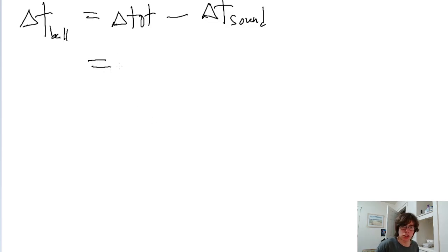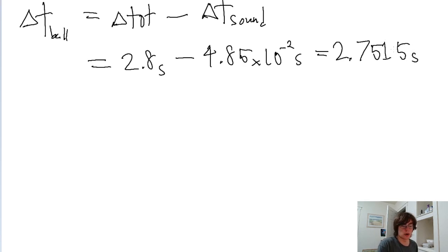So this is the total time of 2.8 seconds minus 4.85 times 10 to the negative 2 seconds, which if you put into a calculator is equal to 2.7515 seconds. That is the time it took for the ball to travel down the lane.